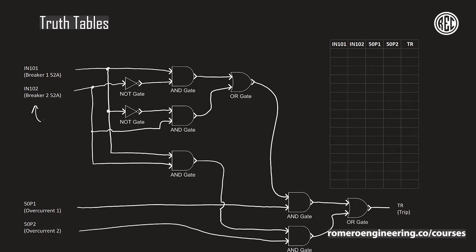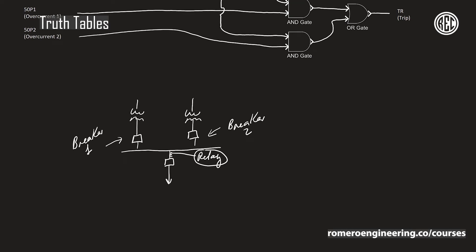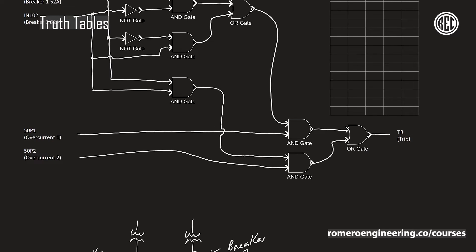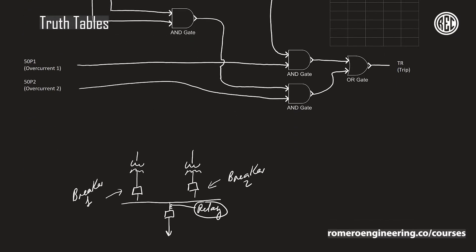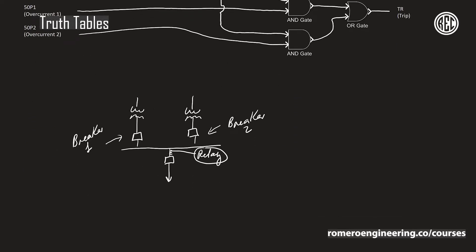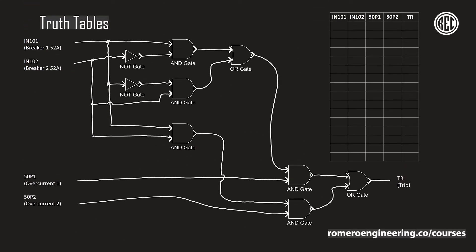Whenever this input is a logical one, or true, that means breaker number two — the transformer low-side breaker for the right-side transformer — is closed, so that input is going to be high or a logical one. Same thing for IN101: that's going to be a logical one whenever the breaker for transformer one on the left is closed. So whenever both breakers are closed, I want to enable overcurrent element 50P2, since I have two sources coming in.